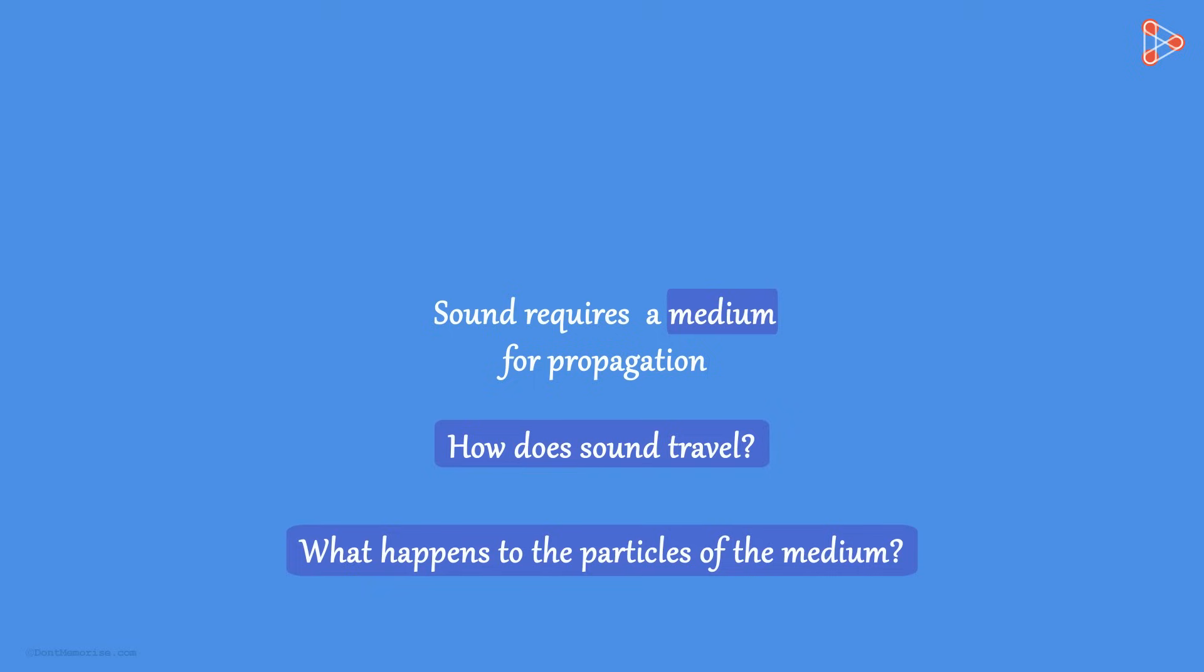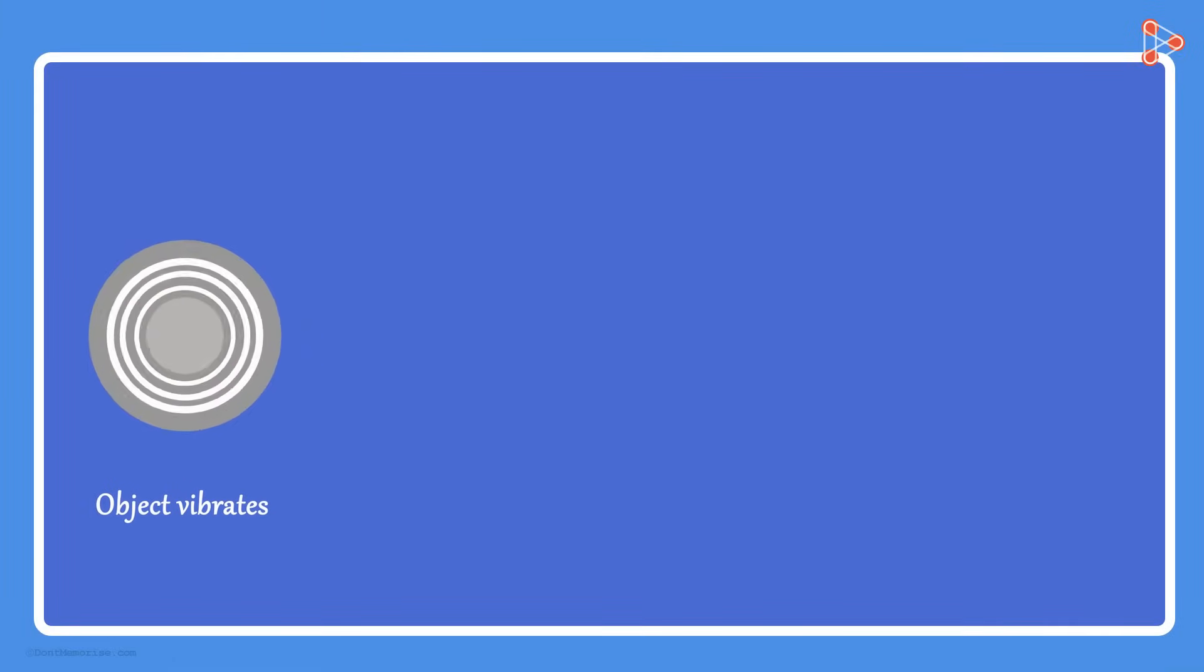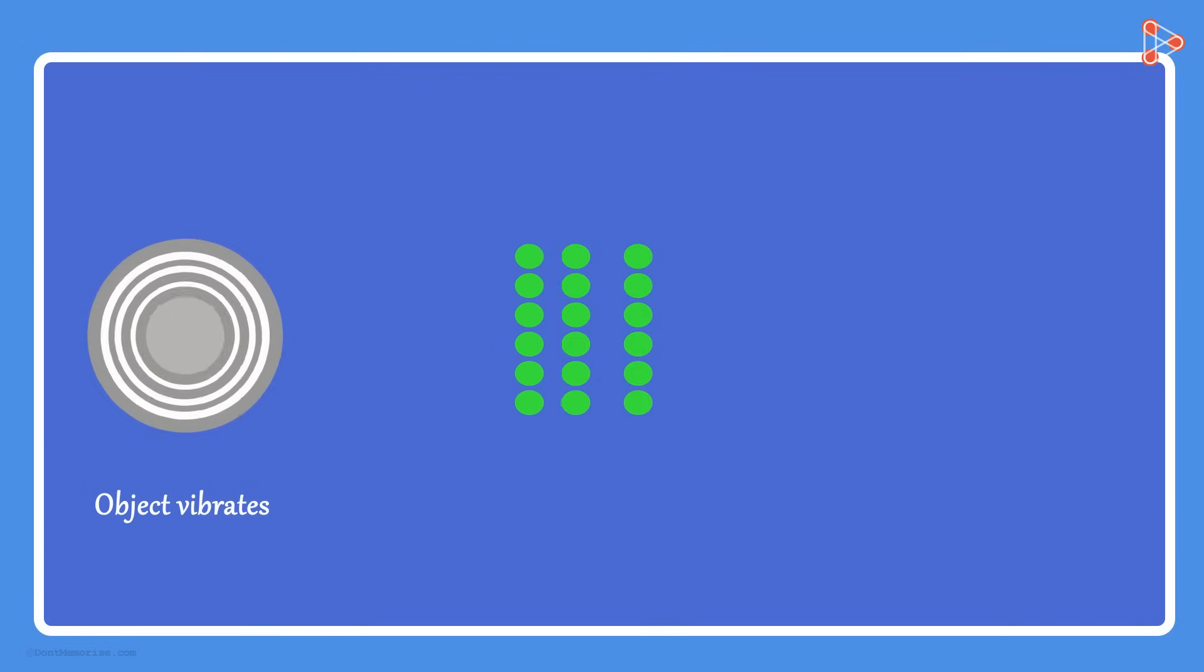We now know that sound is produced by vibration. When the object is vibrating, it sets the particles of the medium around into vibration. In the process, the nearest particles to the source get displaced from their mean or equilibrium position. They start to collide with the particles adjacent to them. The adjacent particles then also get displaced from their mean positions.